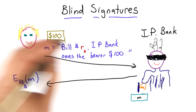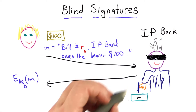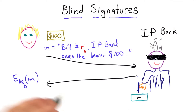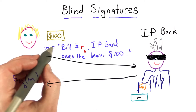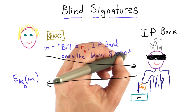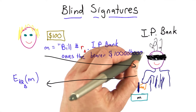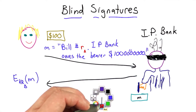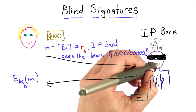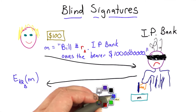This protocol has an obvious flaw in it. The bank doesn't know what it's signing, so Alice could deposit $100 and ask the bank to sign a message for $100 gazillion. When someone deposits that bill, the banker will no longer be smiling.